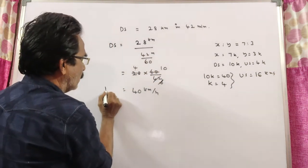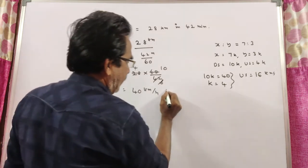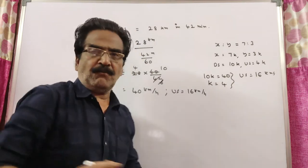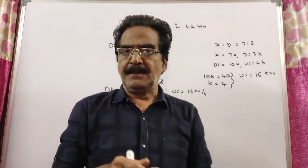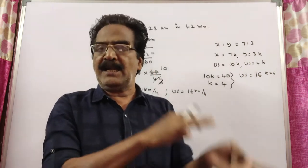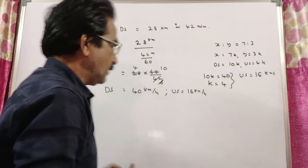Now we know downstream velocity is 40 kilometers per hour and upstream velocity is 16 kilometers per hour. Now we want the time difference between traveling 60 kilometers downstream and 40 kilometers upstream.